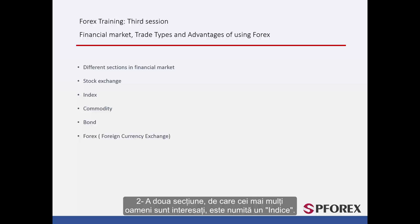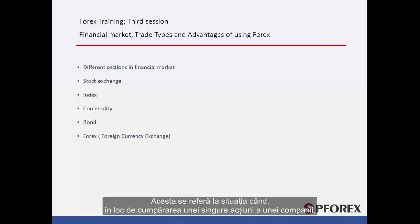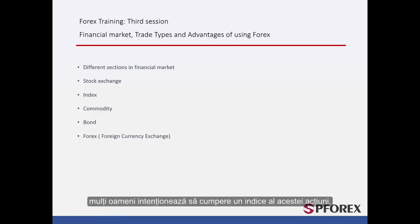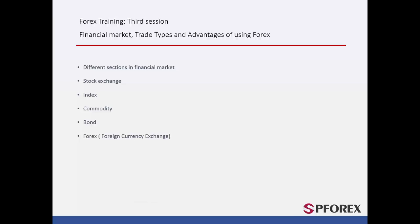The second section, which most people show interest in, is called an index. This is where, instead of buying a single share of a company, many people intend to buy an index of that share. These can be traded internationally. In America, these are known as S&P 500, or the Standard & Poor's 500, and in Germany, they are known as DAX.